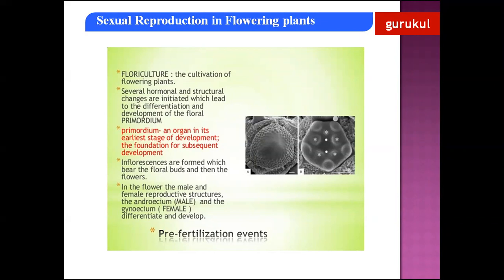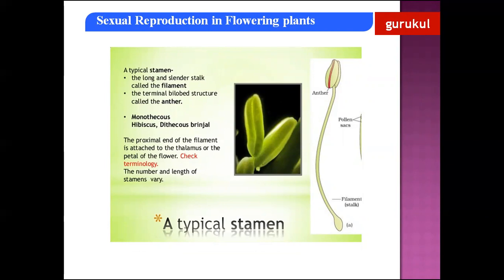In the flower there are male and female reproductive structures. The male structure is called the androecium whereas the female sex organ is called the gynoecium. They are well differentiated and well developed. Sexual reproduction has three events: the pre-fertilization event, fertilization, and the post-fertilization event. In the pre-fertilization event, the flower develops and the male and female sex organs are formed.